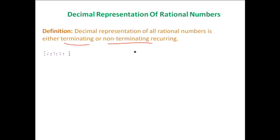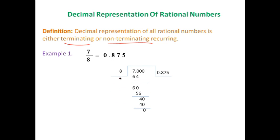For example, if you divide 7 by 8, the answer that you get is 0.875. Let's look at the long division method. When we divide 7 by 8, after a point the remainder comes to 0, so there cannot be any further division. The answer 0.875 is terminating, showing that decimal representation of rational numbers can be terminating.